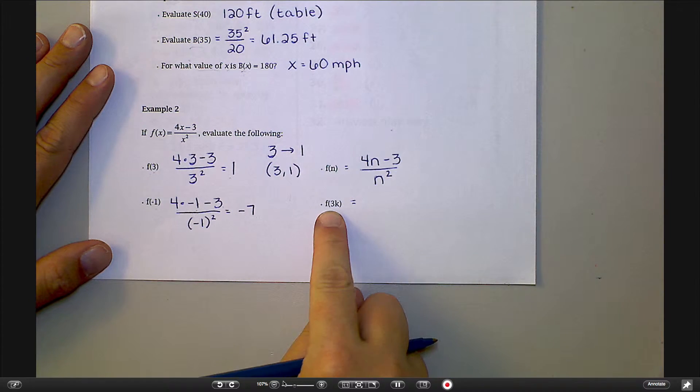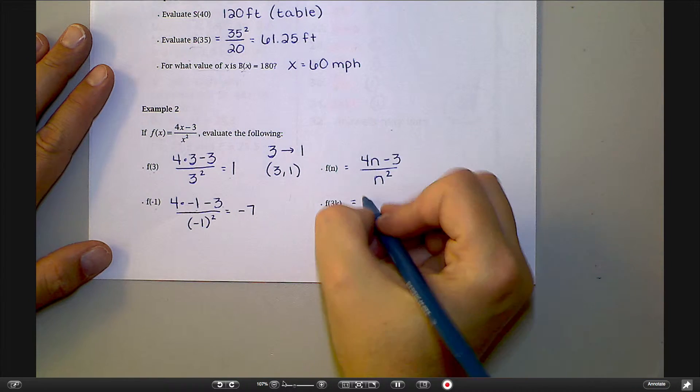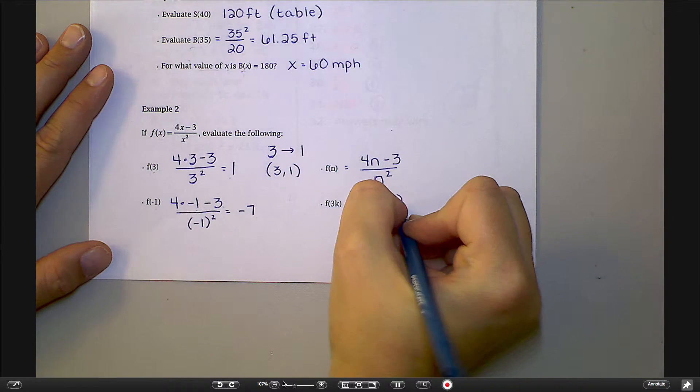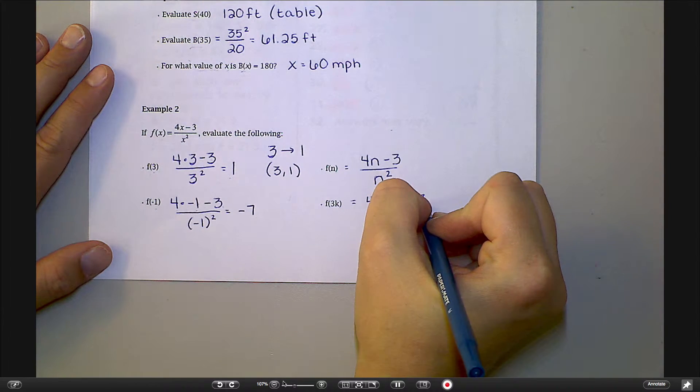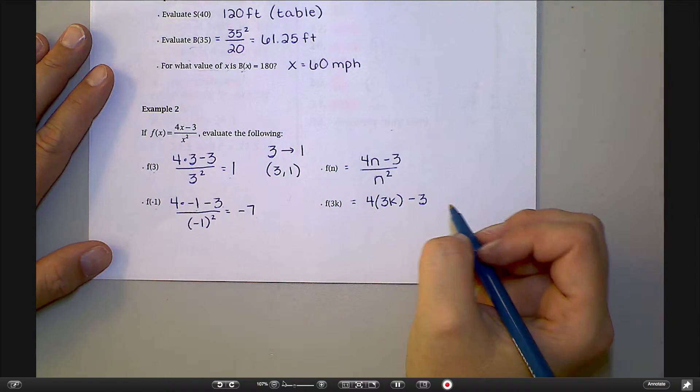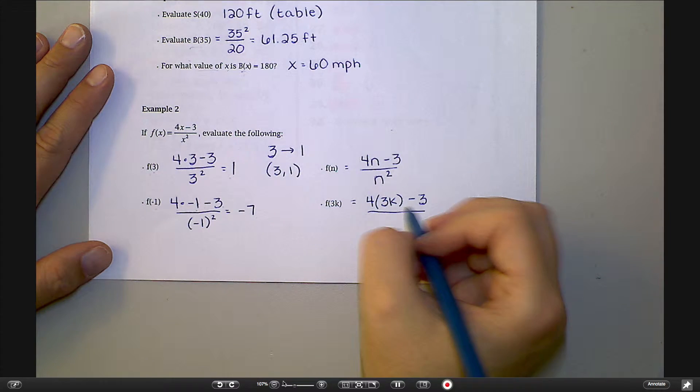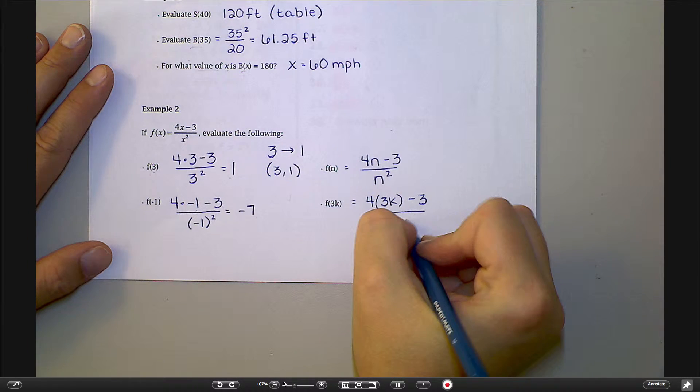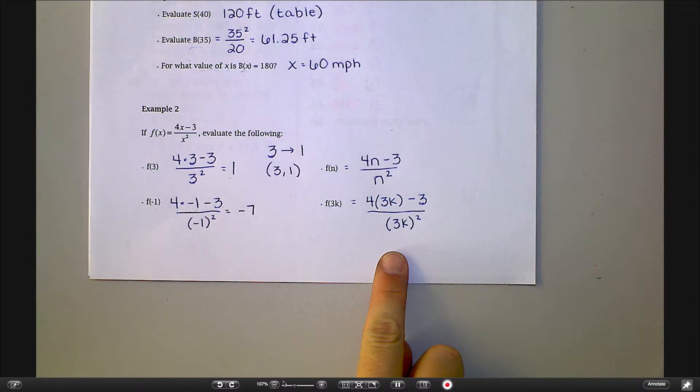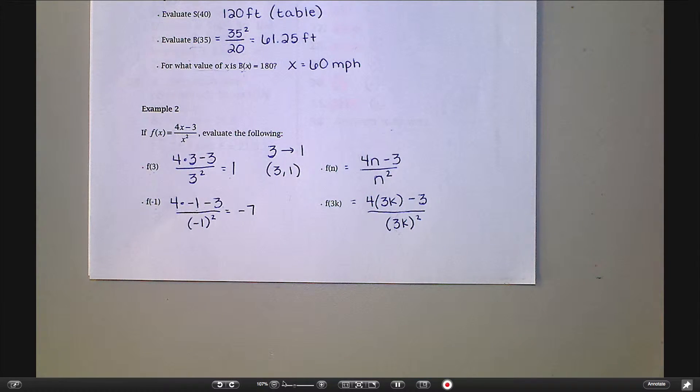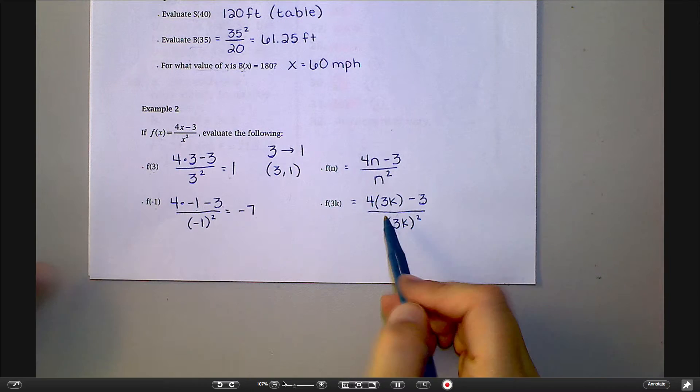And then with this one, same thing. I'm going to put that 3k in place of x. But this one I am going to be able to simplify a little bit. Good thought, I can see why you would think that, but nope. It literally means 3k. And then this would be 3k squared. Notice I put this one in parentheses even though it's not negative. I did that just to make sure that I was squaring this whole thing, because if you just write 3k squared, it's going to look like just the k is being squared.